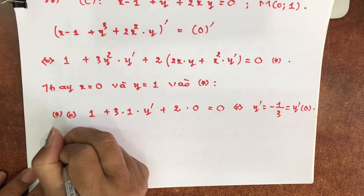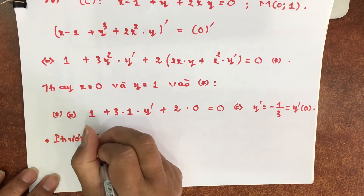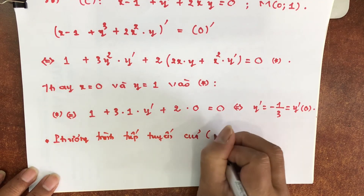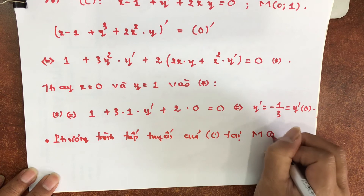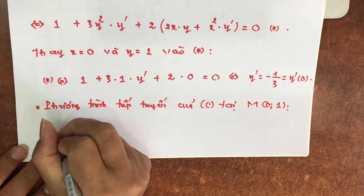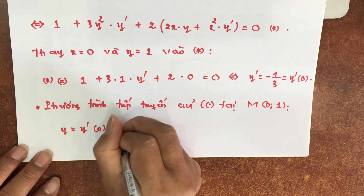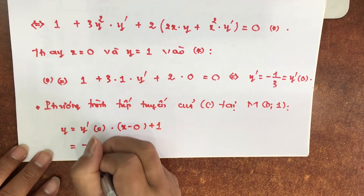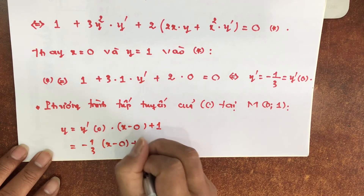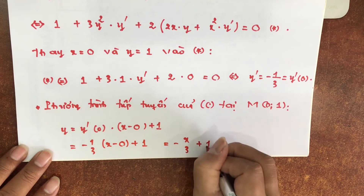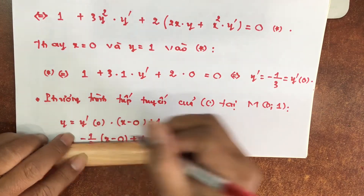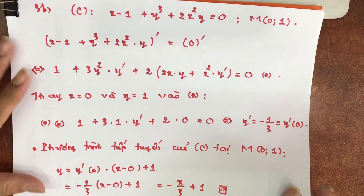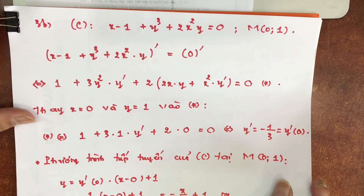Phương trình tiếp tuyến của đồ thị C tại M(0,1). Phương trình là y bằng y'(0) nhân với (x trừ 0) rồi cộng 1. Thế vào thôi: trừ 1 phần 3 nhân với (x trừ 0) cộng 1. Như vậy là bằng trừ x chia 3 rồi cộng 1. Đó là đáp số cuối cùng. Tuy nhiên đoạn hàm hàm ẩn thì đây là cái vấn đề mới, những câu như thế này nó khác biệt so với phổ thông. Kết quả là trừ x chia 3 cộng 1.